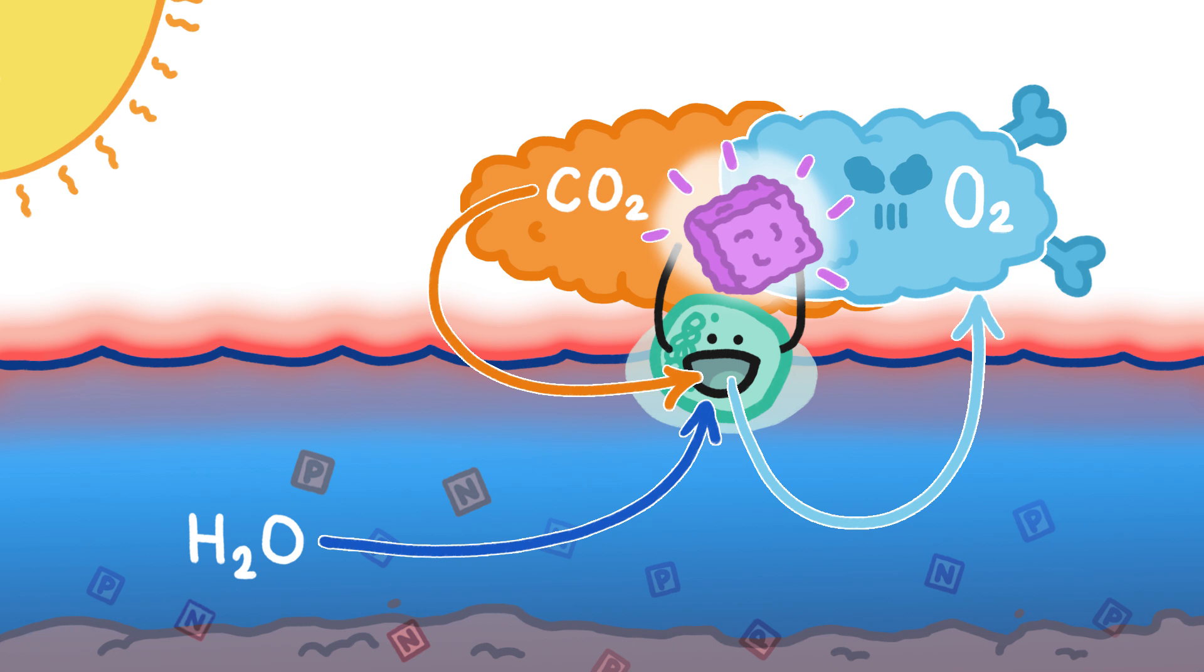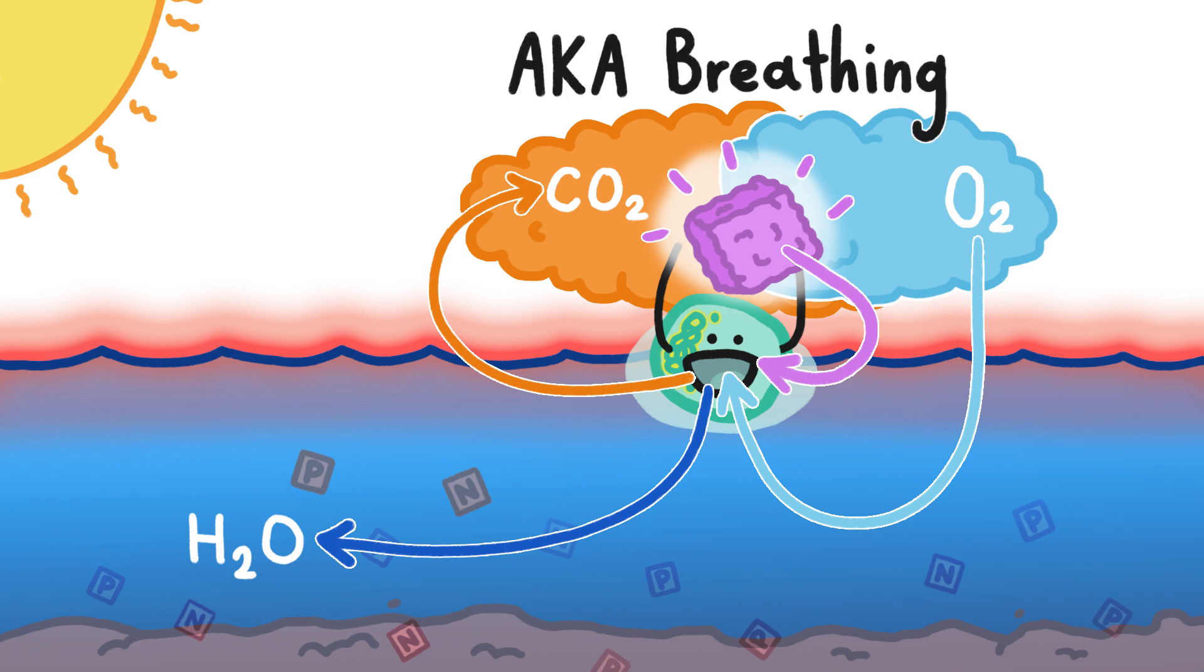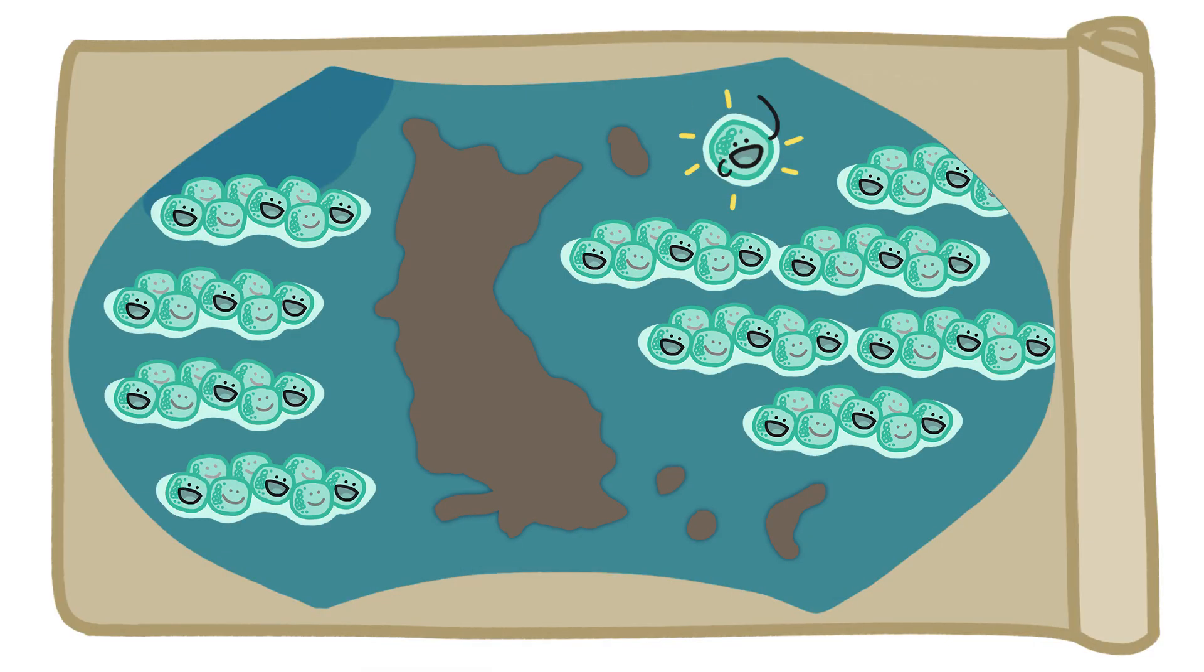But over time, the surviving cyanobacteria evolved to not just tolerate oxygen, but to use it, with a sort of reversal of photosynthesis, which we now call aerobic respiration. This helped cyanobacteria grow to dominate the Earth's oceans for another billion years.